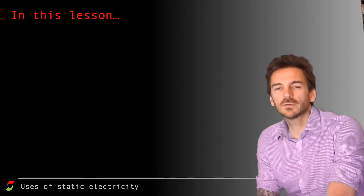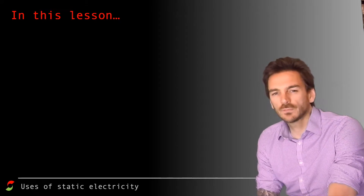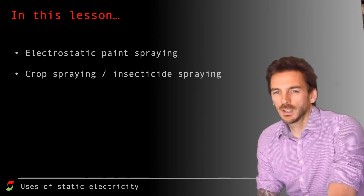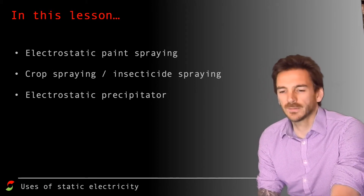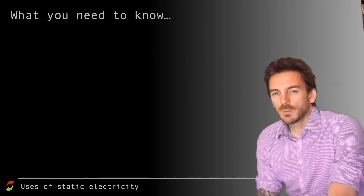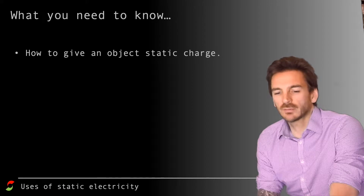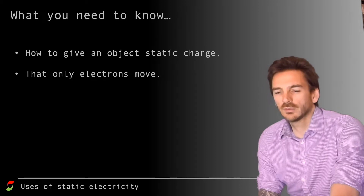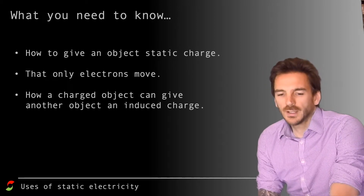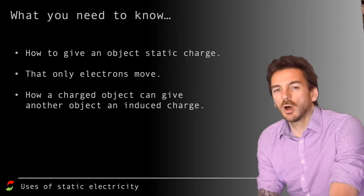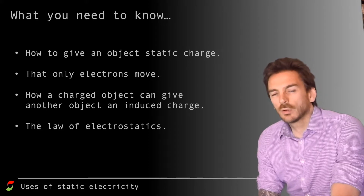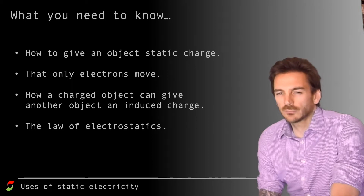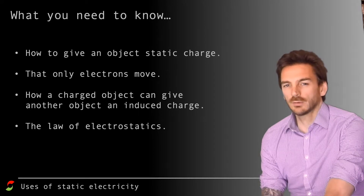Hi and welcome to another episode from Spiral Physics Education. We'll be looking at a few different uses of static electricity in this episode, including paint spraying, crop spraying, and something called an electrostatic precipitator. To get the most out of this lesson, you need to know how to give objects static charge, that only electrons move during the process of giving objects static or induced charge, and that a charged object can give another object an induced charge. You also need to know the law of electrostatics - if you're unsure about any of those, check out other videos on the channel before continuing.